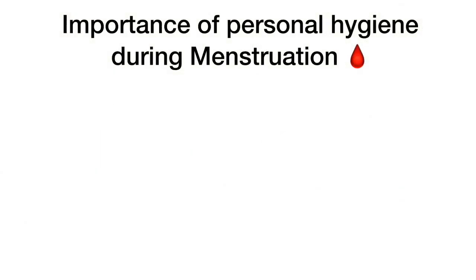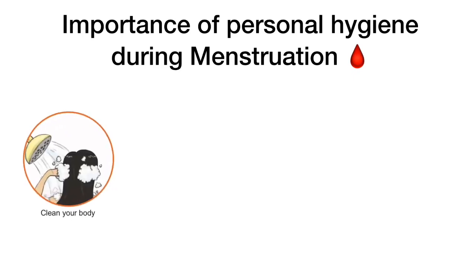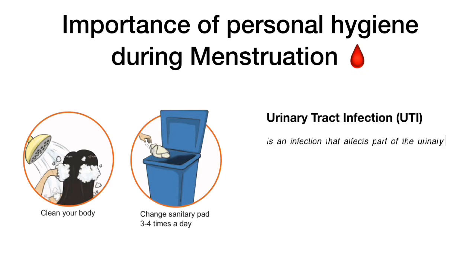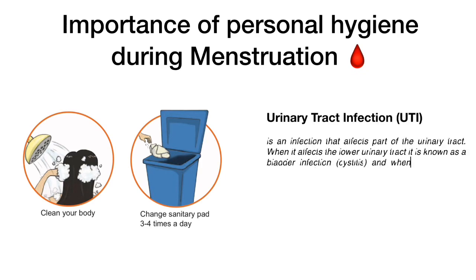A menstruating woman is encouraged to bathe frequently to clean her body. During menstruation, a woman must change her sanitary pad 3 to 4 times a day to prevent infection by bacteria and viruses that might cause urinary tract infection, or UTI.